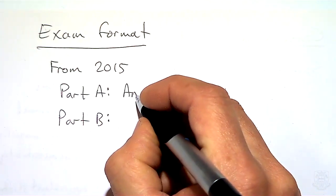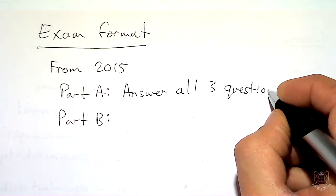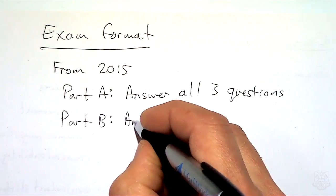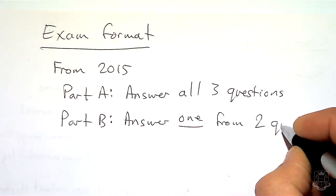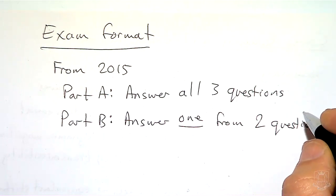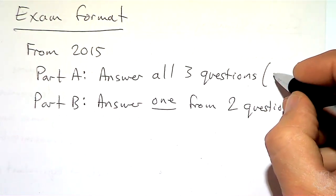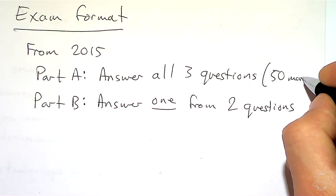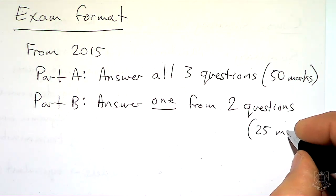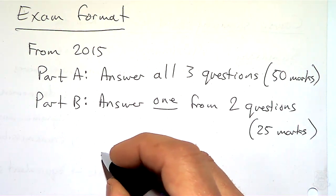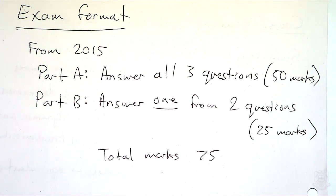In Part A, there are three questions and you have to answer all of them. In Part B, you answer one out of two, so you've got a choice. Part A has 50 marks and Part B each question is worth 25, so the total marks of the paper are 75, which is then scaled into a percentage.